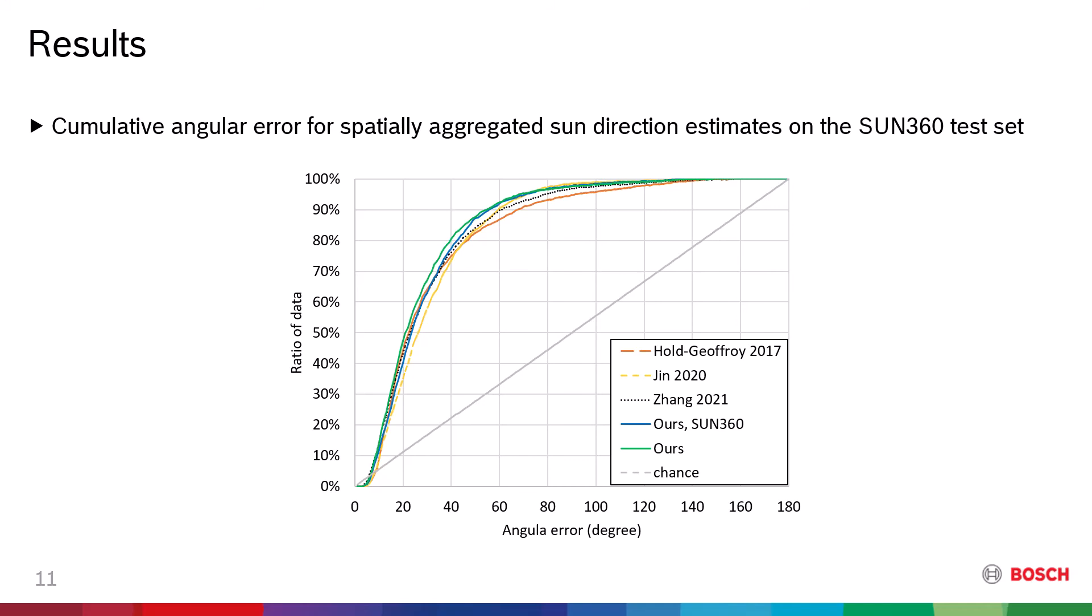We evaluate the angular errors of the spatially aggregated sun direction estimates on the Sun360 test set. At first, single-image lighting estimation results are gathered using the three previous methods and our method. Then, we compensate camera angles and apply our spatial aggregation process on the predictions to acquire the spatially combined estimate for each panorama.